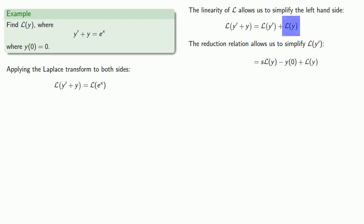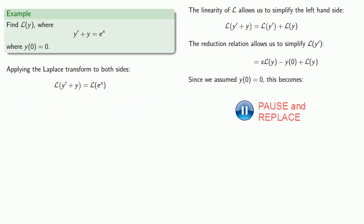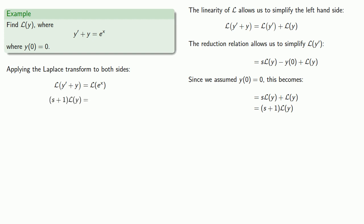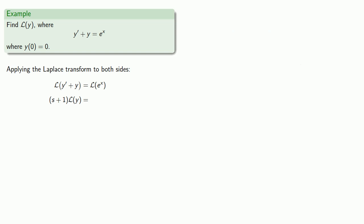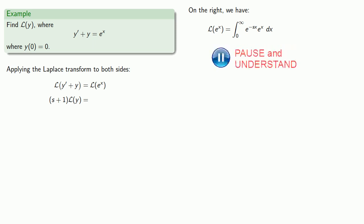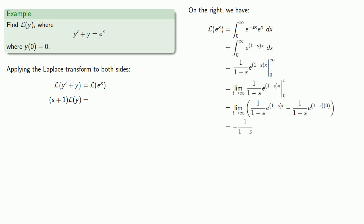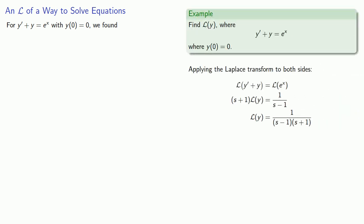And L of y is still there. Since we assumed y of 0 was equal to 0, we clean up the algebra by combining like terms. Because the right-hand side is the Laplace transform of a specific function, we can evaluate it. The Laplace transform of e to power x is 1 over s minus 1. Now, solving for the Laplace transform of y, we get 1 over s minus 1 times s plus 1.